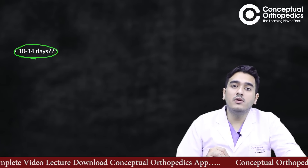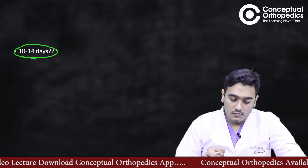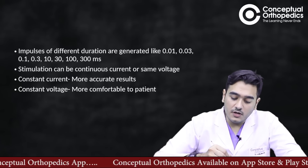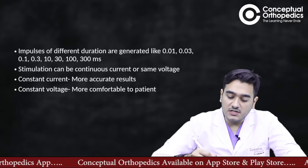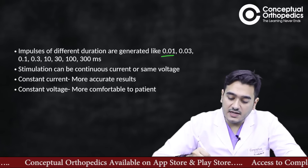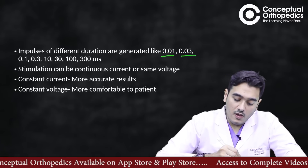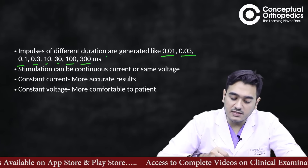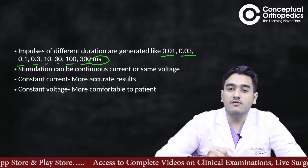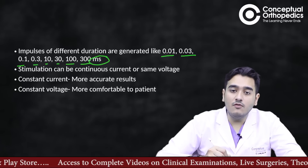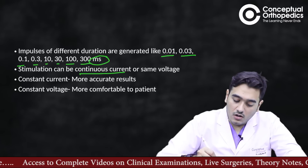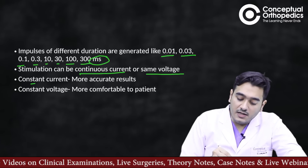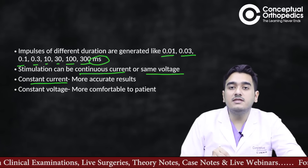Impulses of different durations are generated: 0.01, 0.03, 0.1, 0.3, 10, 30, 100, and 300 milliseconds. The stimulus can be delivered as either a continuous current or a continuous voltage.